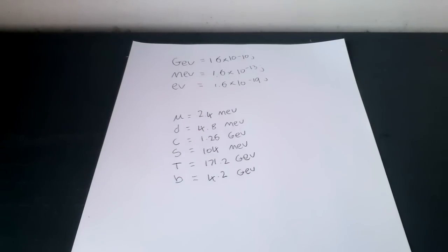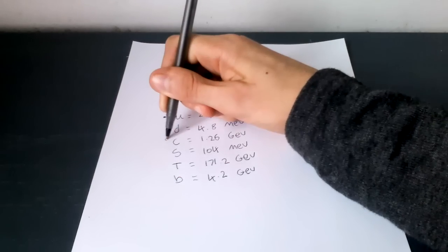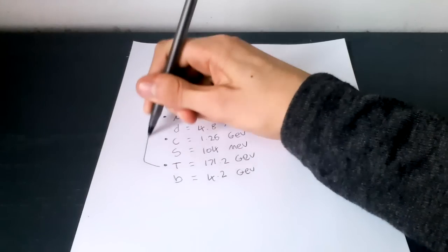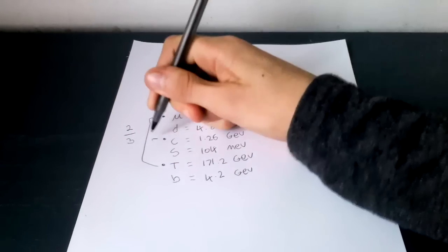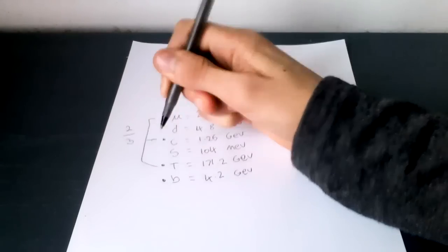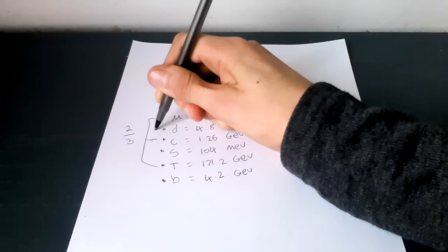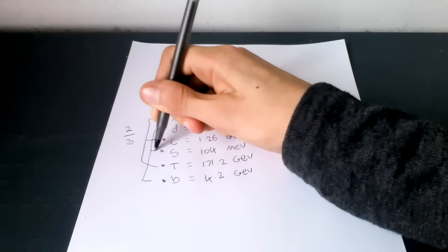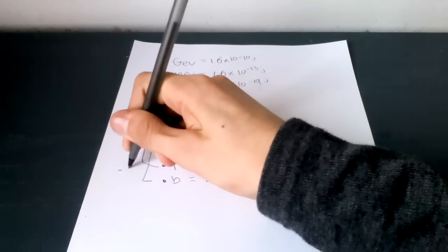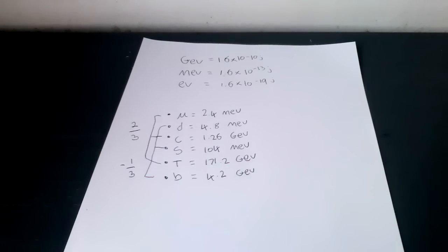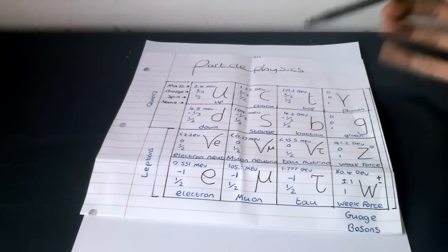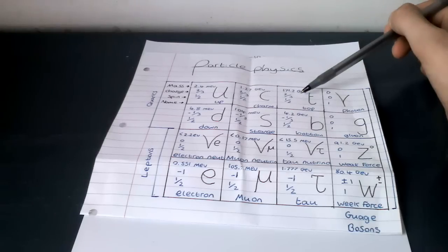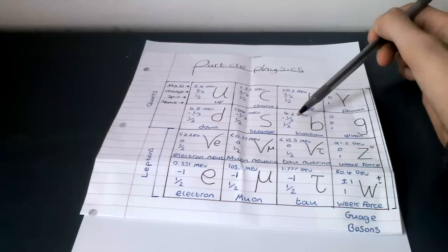Now we're going to establish the charge. The up quark, the charm quark and the top quark have a charge of 2/3. The bottom quark, the strange quark and the down quark have a charge of minus 1/3.